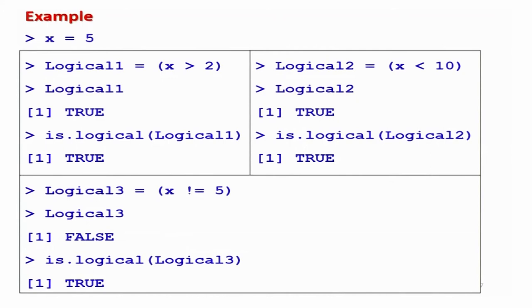After this, I will give you another command which is helpful in finding out whether the outcome of an operation or a variable is a logical variable or not. In earlier lectures we used commands like is.numeric, is.character, etc. Similarly, if you want to check whether a variable or value is a logical variable or not, the command is is.logical(). It gives you an answer which is either TRUE or FALSE, and based on that we can take the correct decision.